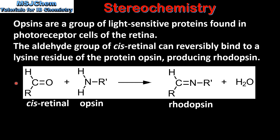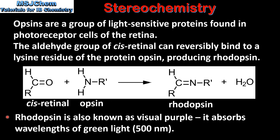In this equation we can see that cis retinal binds with the lysine residue in opsin to produce rhodopsin. Rhodopsin is also known as visual purple. It absorbs wavelengths of green light, and purple is the complementary colour of green.